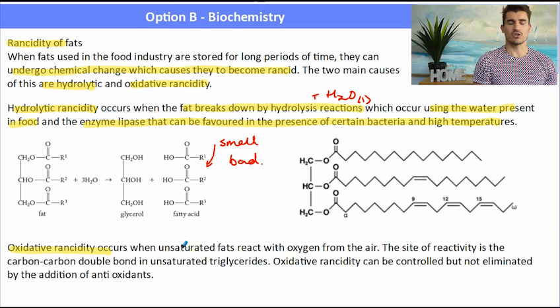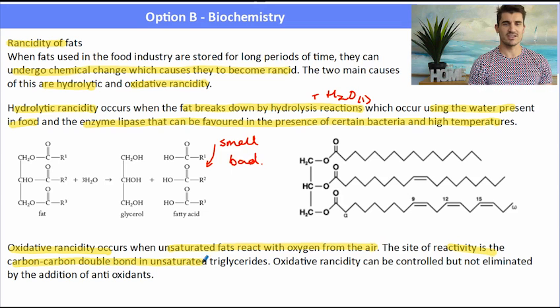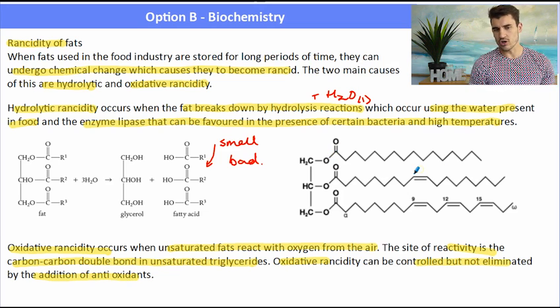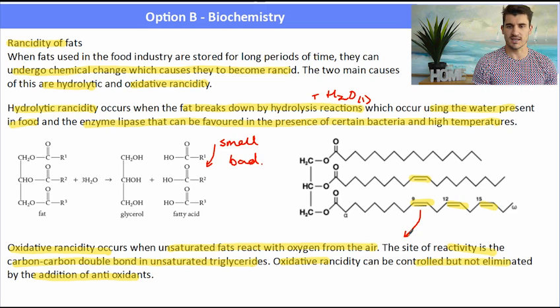Oxidative rancidity occurs when the unsaturated fats react with oxygen from the air and the site of reactivity is the carbon to carbon double bonds, especially in unsaturated triglycerides. We can control this by the addition of antioxidants, but after a long period of time, those double bonds will start to react with oxygen and start to break down.